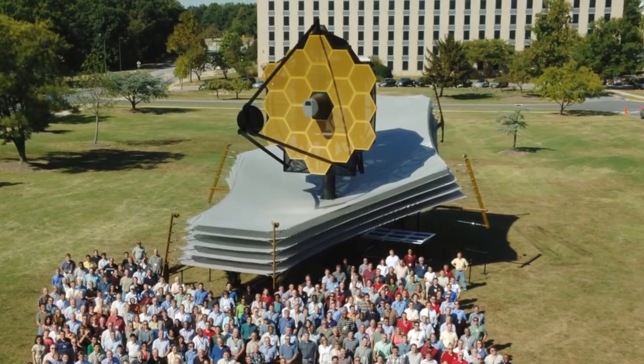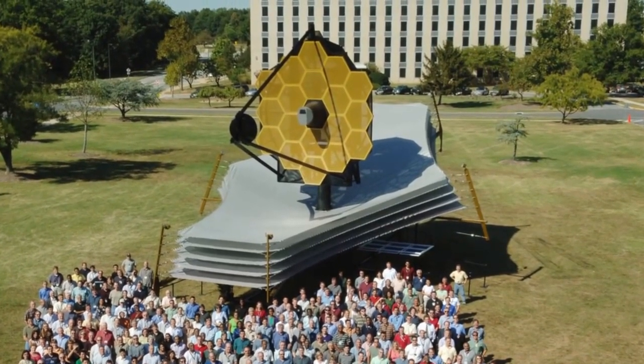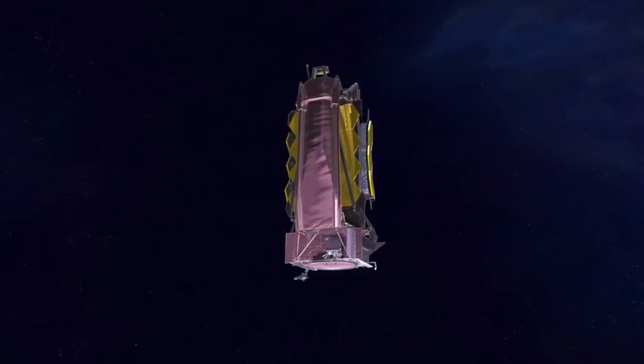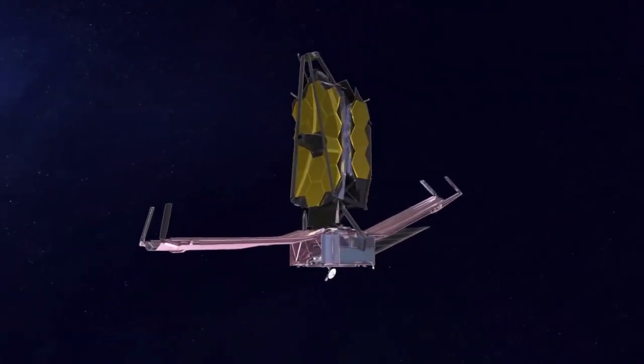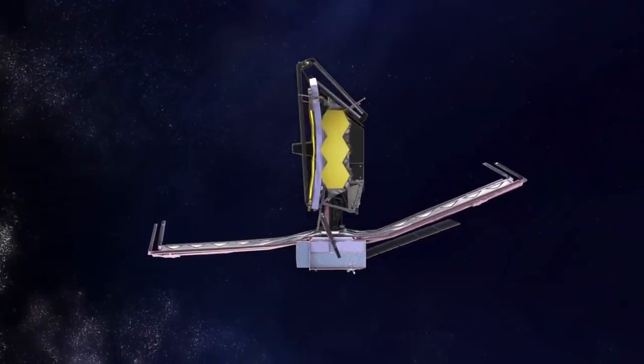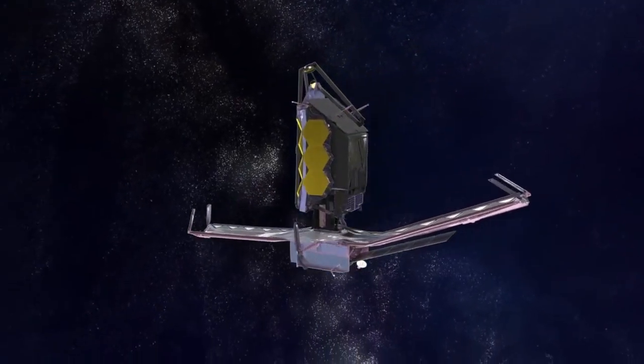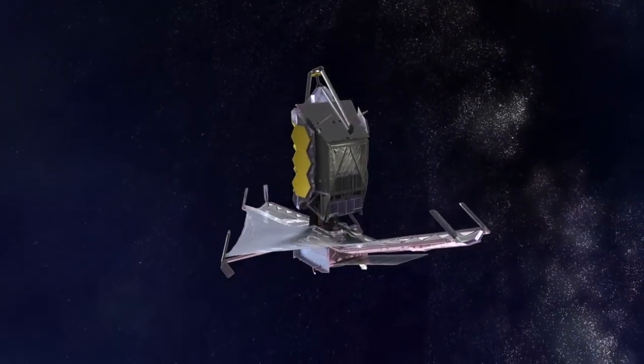The James Webb Space Telescope or JWST is a space telescope primarily developed for infrared astronomy. The most powerful telescope ever launched into space, it substantially improved infrared resolution and sensitivity to allow it to see things that the Hubble Space Telescope cannot see.